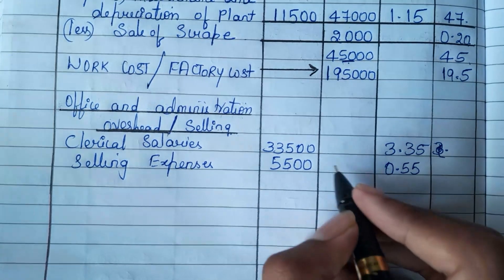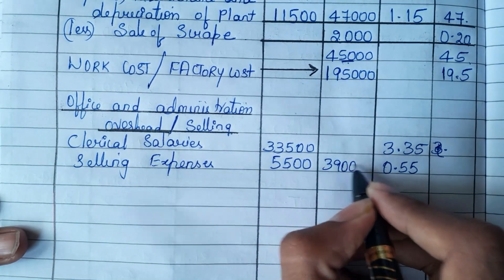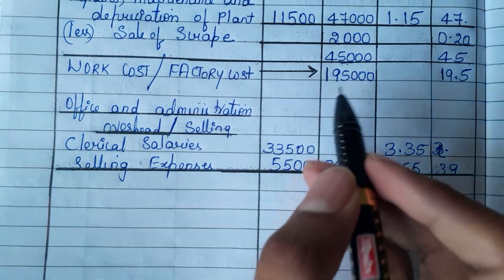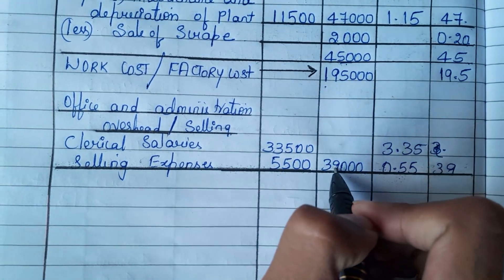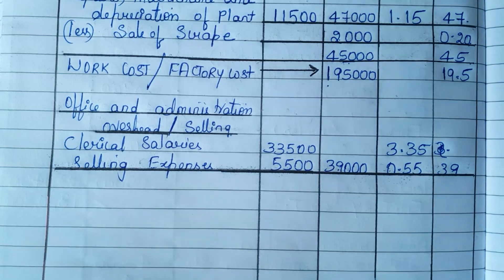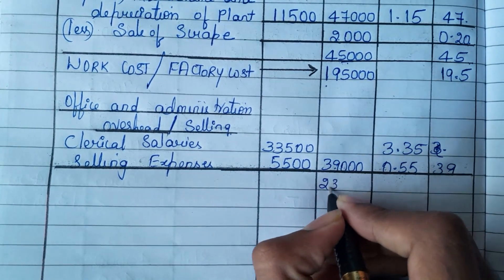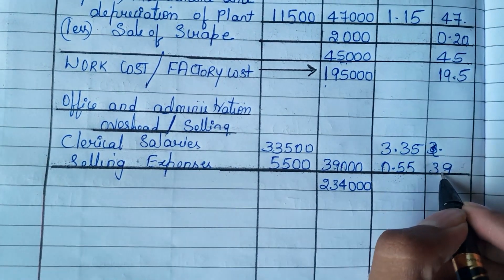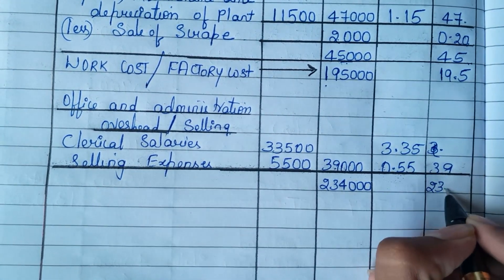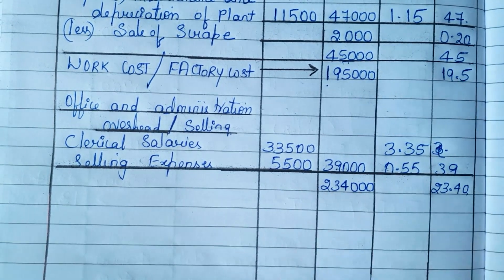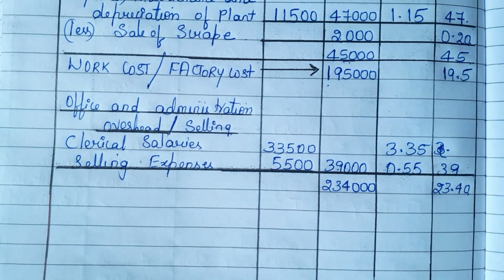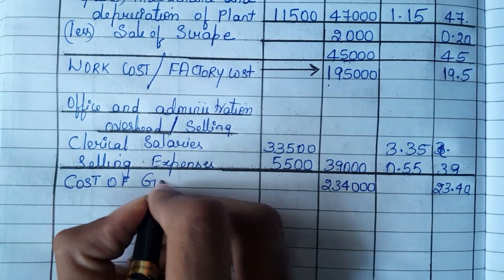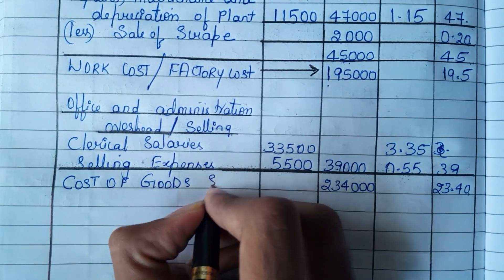Add these two — we get 39,000 and here it will be 39 rupees per unit. Now add 1,95,000 and 39,000; you will get 2,34,000. Add 19.5 and 3.9, you will get 23.40 per unit. This 2,34,000 is known as cost of goods sold.